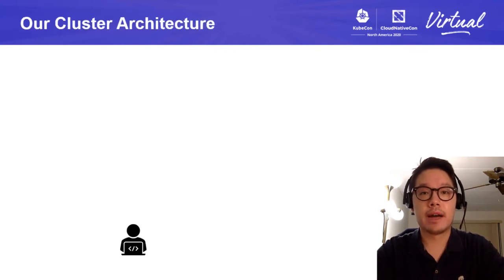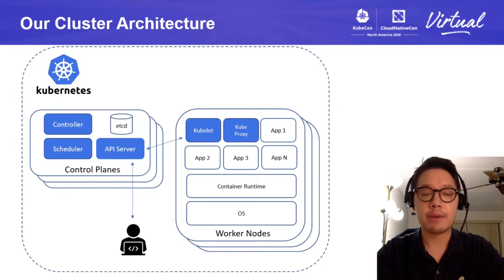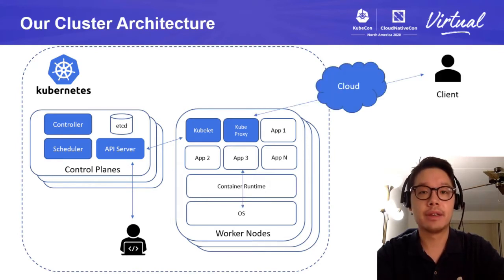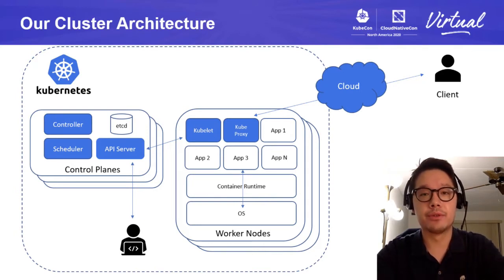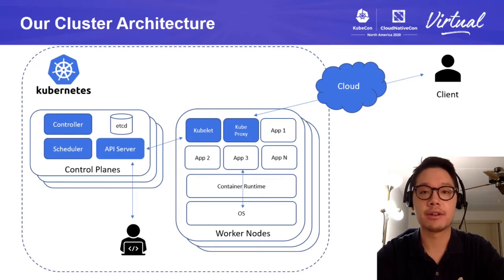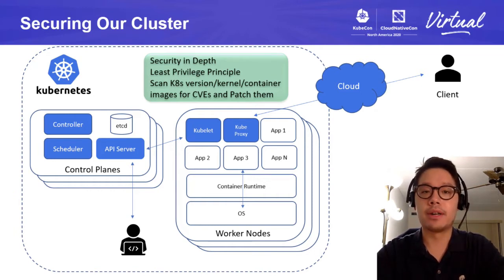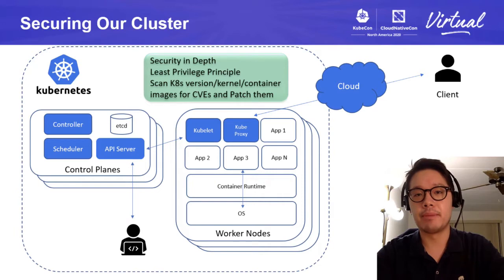I manage a Kubernetes cluster and within our cluster we have a lot of containers. Some of our containers manage traffic from the public cloud. We dynamically scale our containers to be able to handle all the traffic load. On a very busy day, we have over 100,000 containers running in our cluster. Because we handle public traffic, security is one of our top priorities and we follow many security best practices.